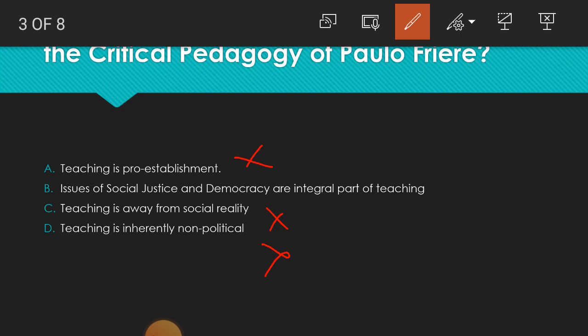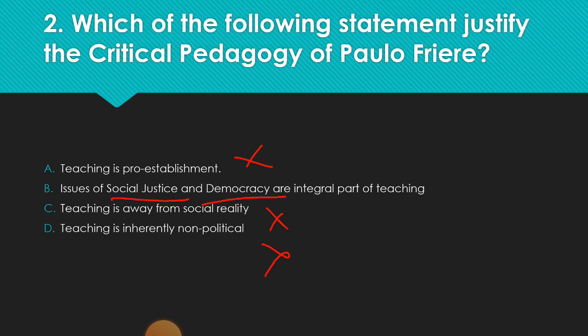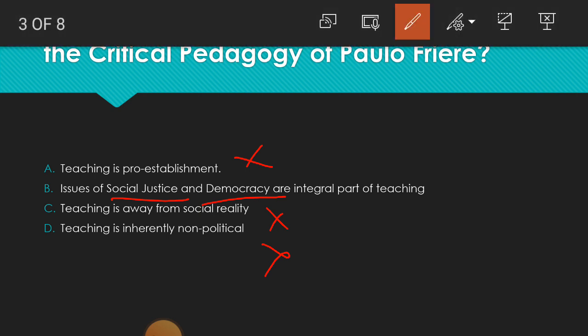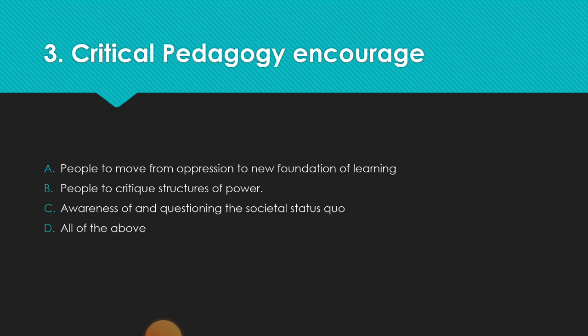So we can say that issues of social justice and democracy are an integral part of teaching. The concept of critical pedagogy is to imbibe social justice and democracy among students by the educator, and to make social justice and democracy an integral part of teaching. That is the main objective of critical pedagogy. So B is the correct answer.